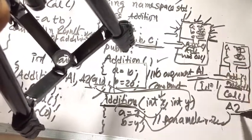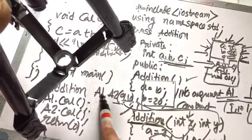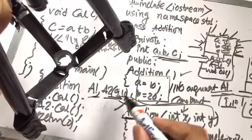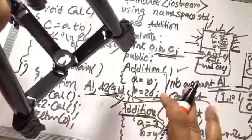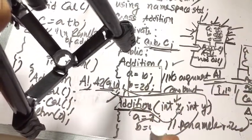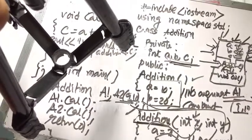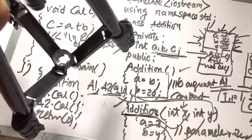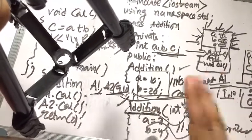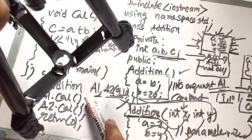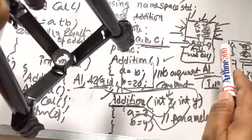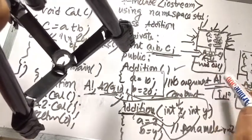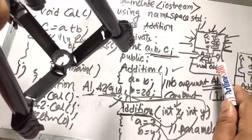So the purpose of the constructor is done when the object is created. Constructor is called, initialization is complete. When we call a1.cal, the calculation function is activated.